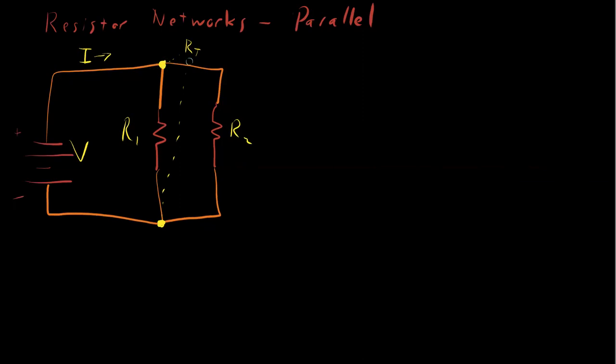We're going to call it I. And it branches off into a current here and a current here. And therefore, this current that flows this way, we'll call it I1 for resistor one. And this current here, we'll call it I2 that flows through R2.